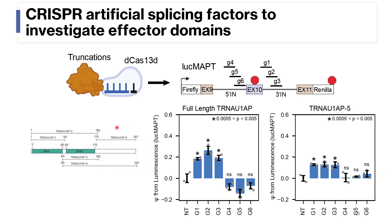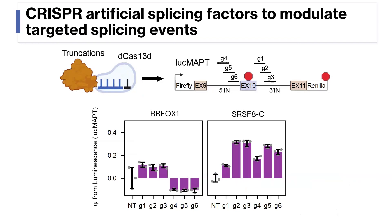Another application of these CRISPR artificial splicing factors is to modulate targeted alternative splicing events. We used our reporter to improve upon previously published technology. In previous approaches, researchers used full-length proteins known to influence splicing, like RBFOX1. To compare, we tested a bunch of candidates — chopped up proteins to find small, more potent effector domains — and ended up developing artificial splicing factors based on the C-terminal domain of SRSF8 that outperformed the previously published technique.